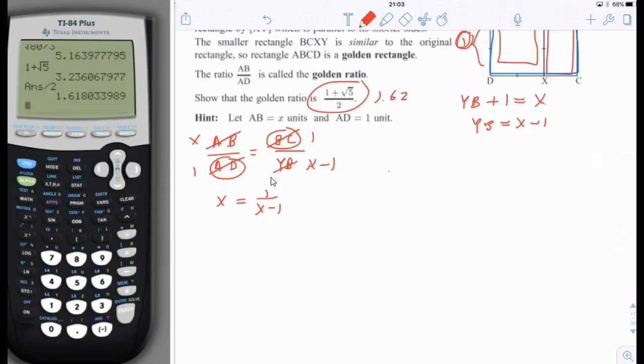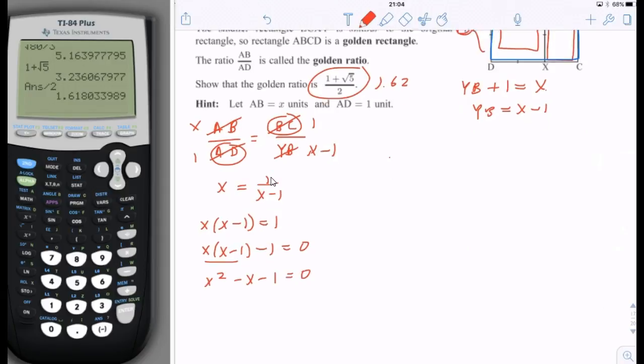Now we're going to try to find out what X is, and guess what? It's going to equal 1.62. So we're going to move everything to the left side. The first thing we need to do is we don't like to have X minus 1 in the denominator, so we're going to multiply both sides by X minus 1. Now I'm going to subtract 1 from both sides. Now I'm going to multiply out X and X minus 1 because I want a quadratic.